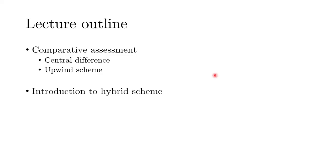In the last few lectures, we have looked at the convection-diffusion equation and we saw how we can use the central differencing and upwind schemes. We also saw how we can write our own solvers to solve those. The lecture today will talk about the comparative assessment of central differencing versus the upwind scheme.